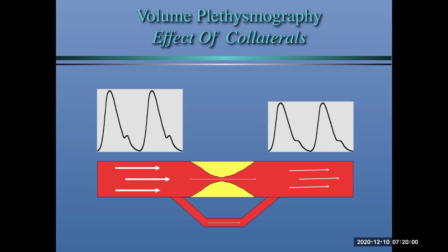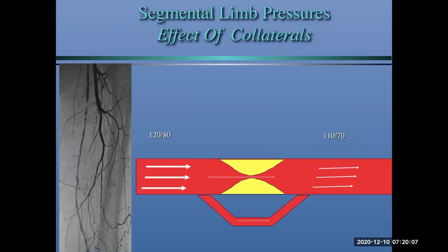As collaterals develop, the waveform can start to look more normalized, and the pressure may normalize as well. Here's a patient with diffuse SFA and popliteal artery disease — remember the SFA becomes the popliteal artery angiographically at the descending geniculate artery, though many use the medial border of the femur at the adductor canal. You have to understand that PVR is a functional test of physiologic flow, and you can be fooled — in this case, collaterals have really normalized the PVR.